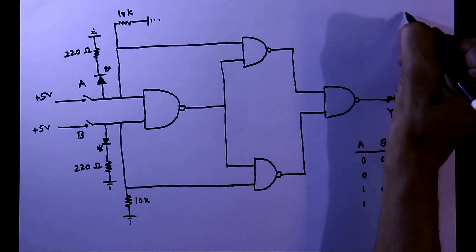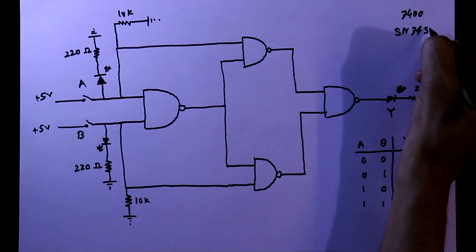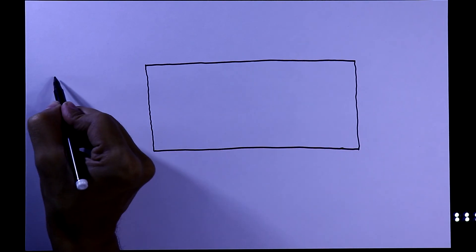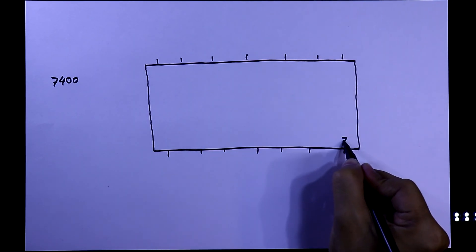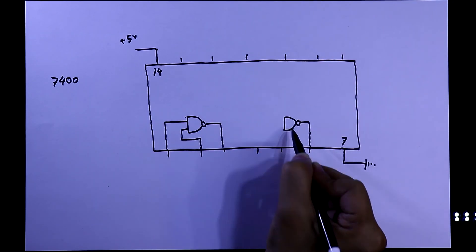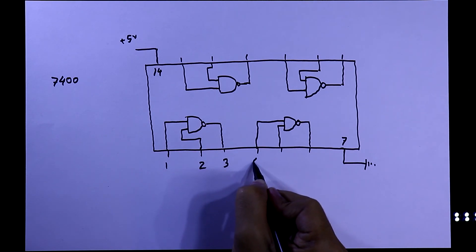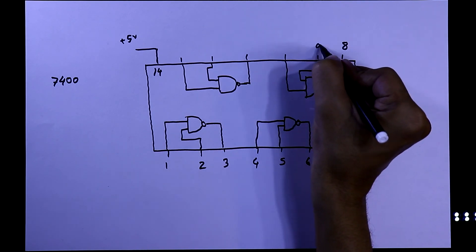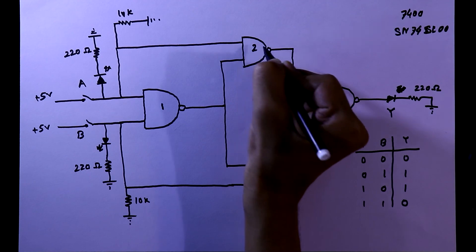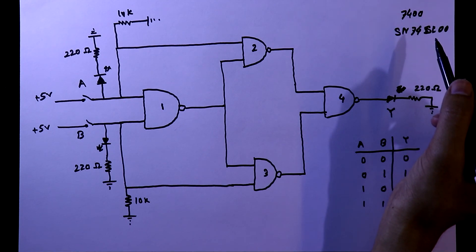We will implement this using IC 7400, which is the SN74LS00 NAND gate IC. Looking at the pin diagram of IC 7400: it has 14 pins. Pin 7 connects to ground, pin 14 connects to +5V. It contains 4 NAND gates. Pins 1 and 2 are inputs and pin 3 is the output of gate 1, and so on for the other gates. Since we need 4 NAND gates, one IC is sufficient.